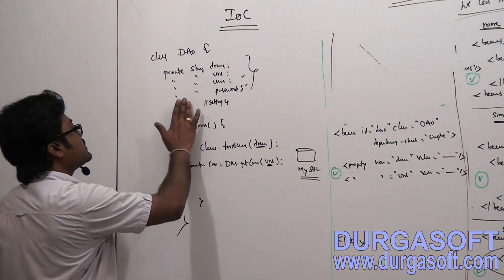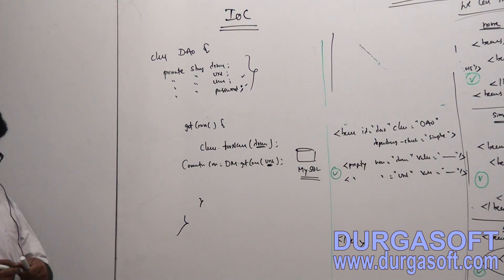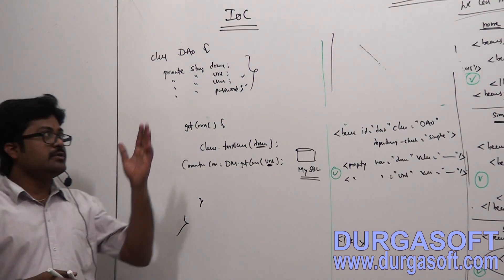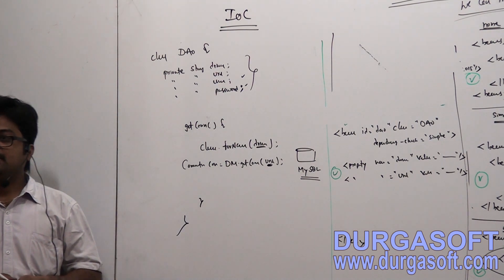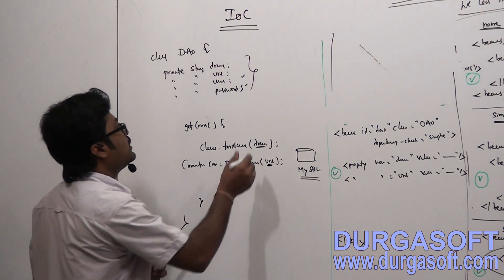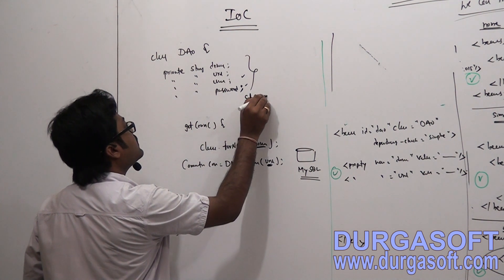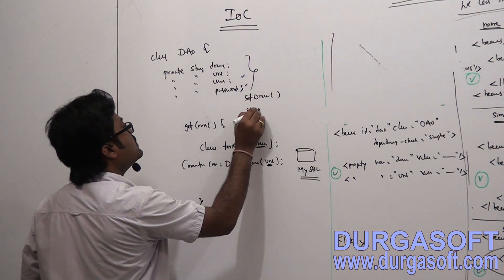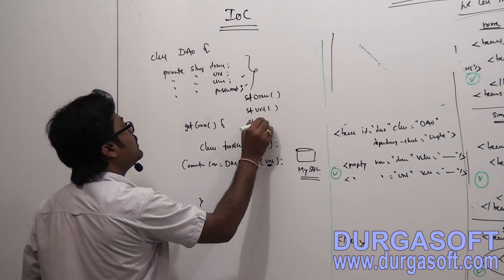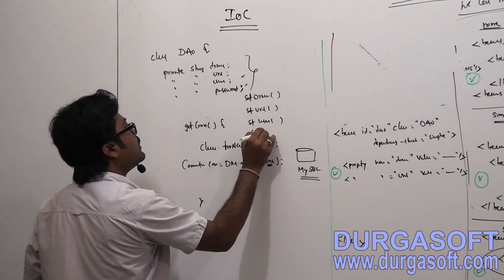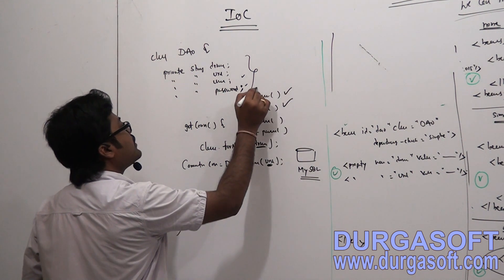If you have 4 setter methods — setDriver, setUrl, setUser, and setPassword — and you only require 2, apply the @Required annotation only on those 2 setter methods, for example setDriver and setUrl.